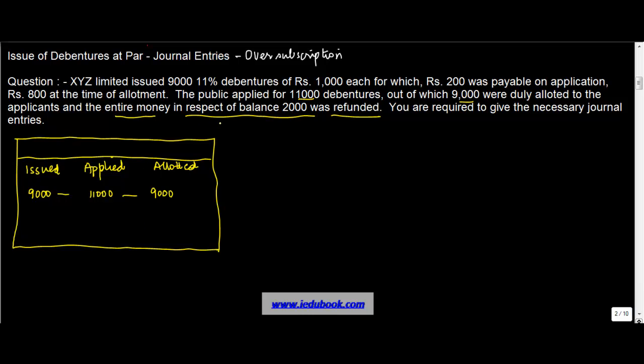And the entire money in respect of the balance 2,000 was refunded. So we have a refund column as well, 2,000 refunded. So when you issued 9,000 shares, you made an offer, was there any money that you received? The answer is zero. Let's say this is for money received.